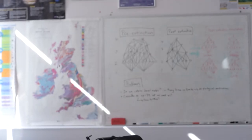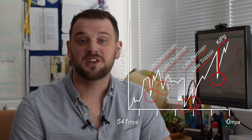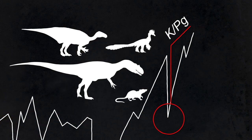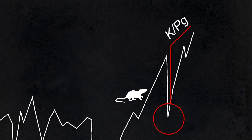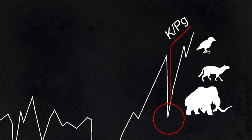As the Earth recovers from these extinction events, new species evolve into the ecological roles or niches left vacant by the species that went extinct. This represents a restructuring of the biosphere, which ultimately changes the course of evolution. A key example of this is in the aftermath of the Cretaceous-Paleogene mass extinction 66 million years ago, when the extinction of the non-avian dinosaurs allowed mammals to establish themselves as the dominant group of large terrestrial animals.